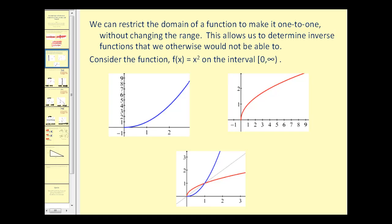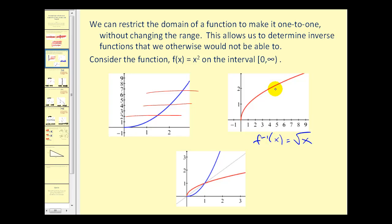Restricting the domain allows us to determine inverse functions that we otherwise would not be able to. For example, if we consider f(x) = x² on the interval from zero to infinity, this is a one-to-one function, which allows us to find the inverse function that we otherwise could not on the interval from negative infinity to infinity. The inverse operation of squaring is square rooting, so here in red we see our inverse function f⁻¹(x) = √x. If we graph them on the coordinate plane with y = x, we can see the symmetry across that line.